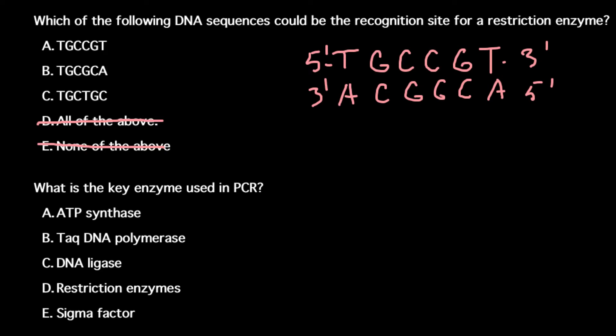To find out if this can be a recognition site for the restriction enzyme, both strands of the DNA should be read the same in the 5 to 3 direction. Here we have T-G-C, and here from the 5 to 3 prime direction we have A-C-G. So this cannot serve as a recognition site for the enzyme.